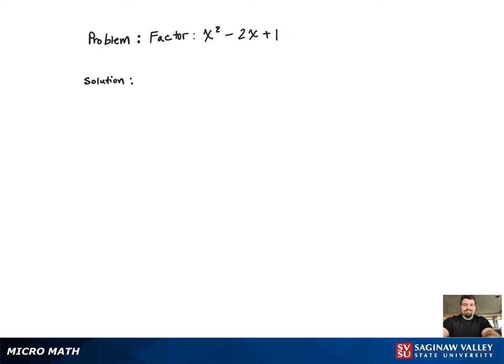We will begin this factoring problem in a typical fashion by setting up the two binomials. Both the coefficient of the x squared term and the constant term are both 1, which only has one factor, which is 1 and 1.